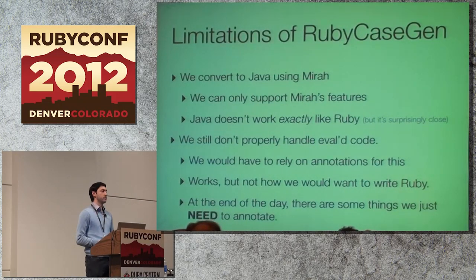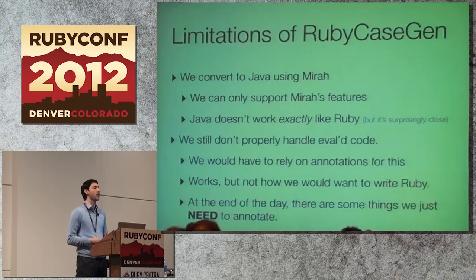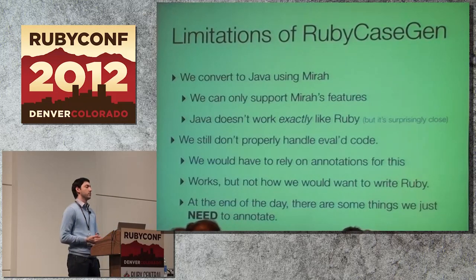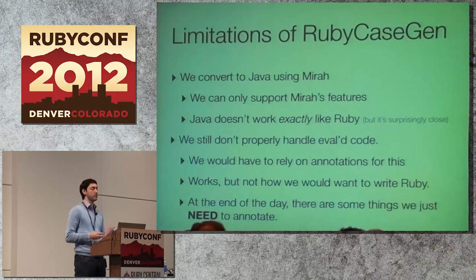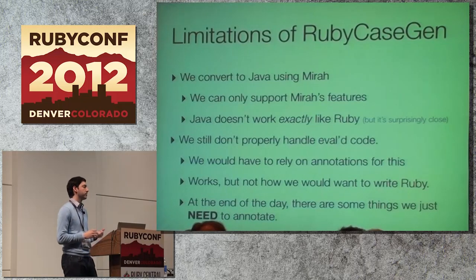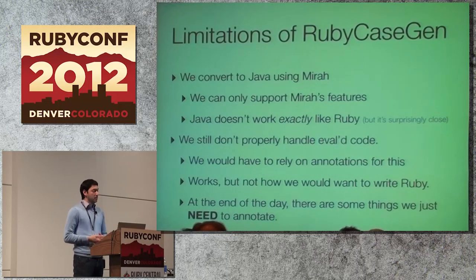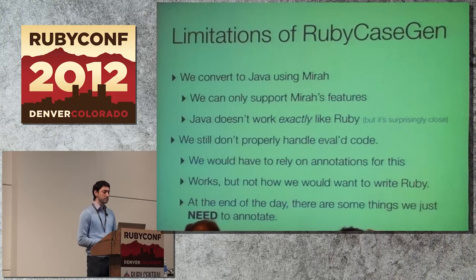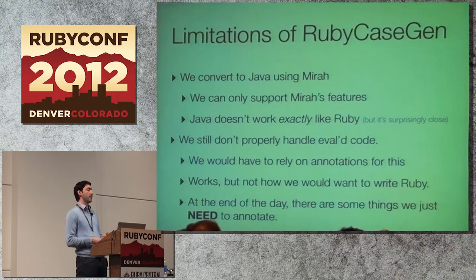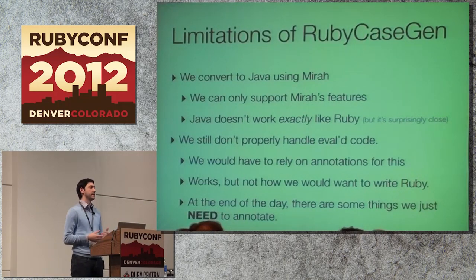One of the limitations of Ruby Case Gen is that we convert Ruby into Java using Myra, so we can only support what Myra supports — and Myra does not have full coverage of Ruby, it's only a Ruby-like language. Java also doesn't work exactly like Ruby: integer values don't work the same way, though fortunately most differences are fairly minor. The other bigger issue is that we still don't properly handle dynamic code, and we still have to rely on annotations for this kind of stuff — which is not really how we want to write Ruby code.